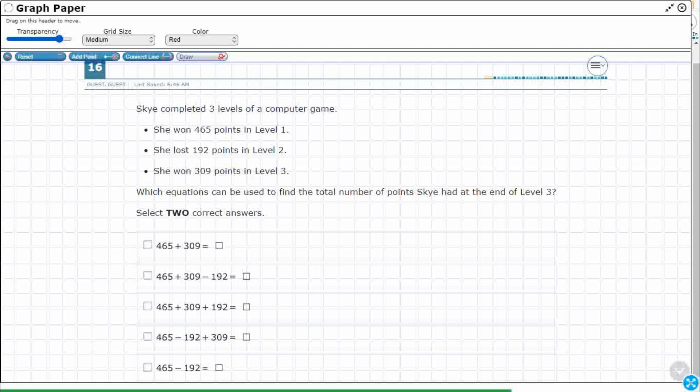So, won a level in 465 points, lost 192 points, 192 points in level two, 309 points in level three. So really what we need to do is we need to just translate this into addition and subtraction. That's all we're doing.